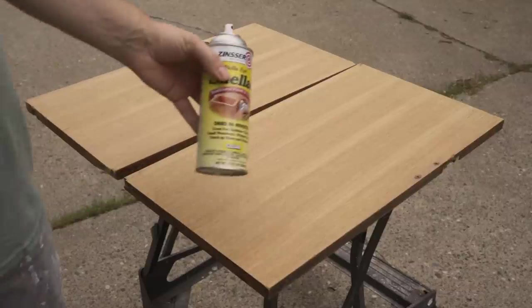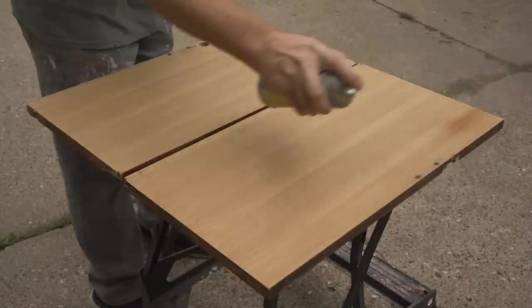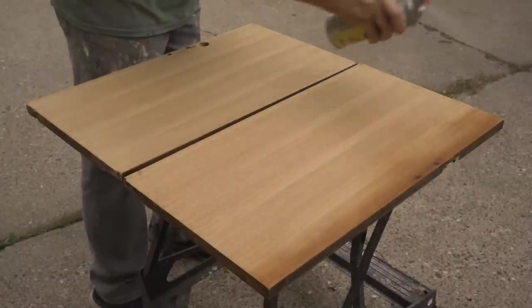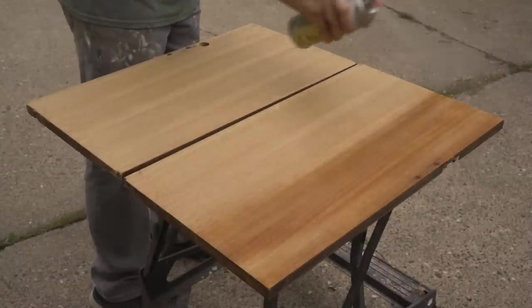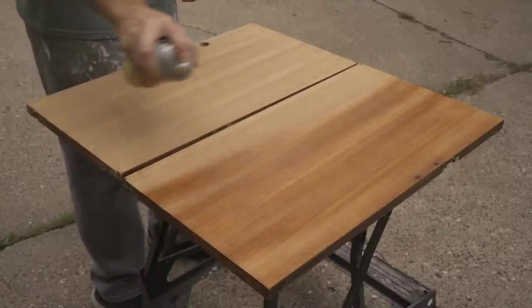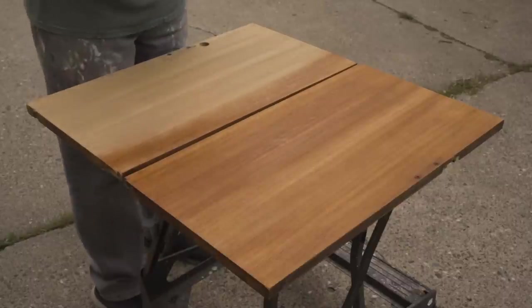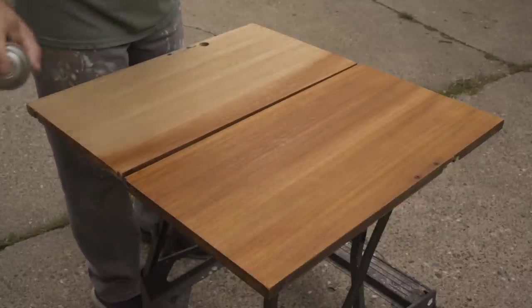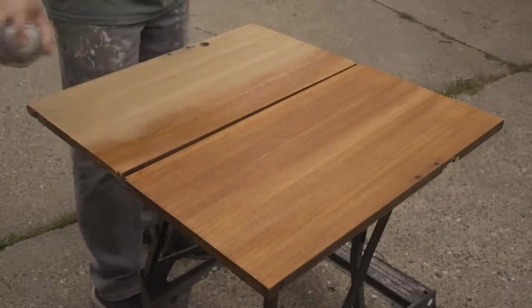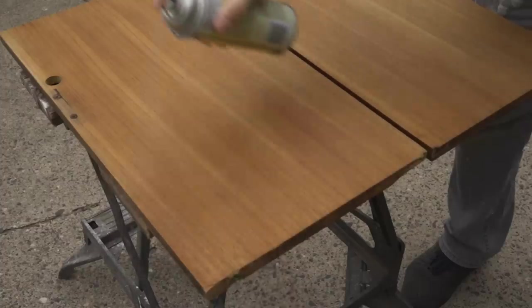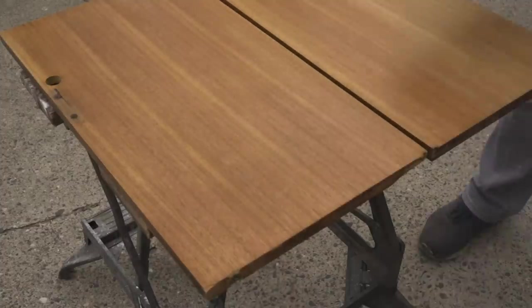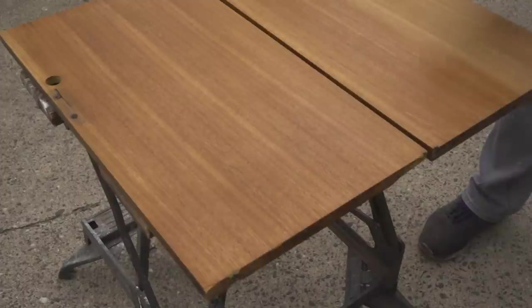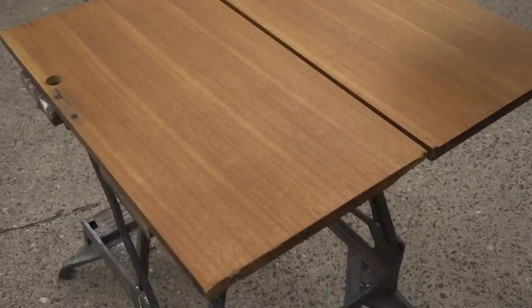Time to start getting some finish on here. And I'm going to begin by just putting some shellac, clear shellac on everything. Just see how it looks. Make sure there are no issues that pop up once I put the finish on. So far it looks great. So now we'll just spray some shellac over all the other parts.